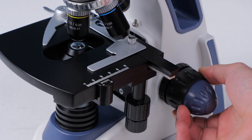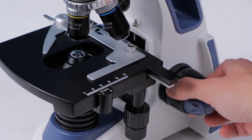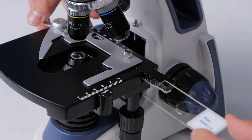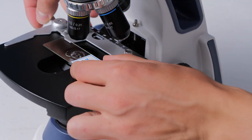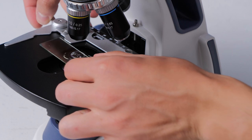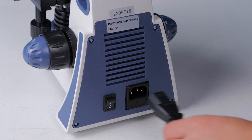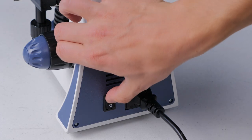This is the coarse focus and this is the fine focus. Use the coarse focusing knob to move the stage all the way down and put one of your prepared sample slides onto the stage. I like the pine stem. Plug in the microscope and turn on the transmitted light illumination switch.